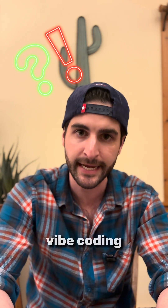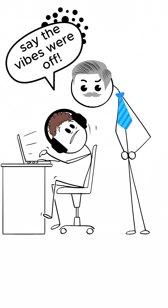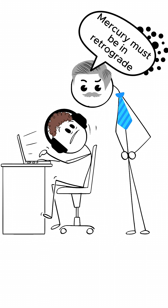What on earth is vibe coding? Boss, the unit tests say the vibes were off. Mercury must be on restaurant ground. Not quite.